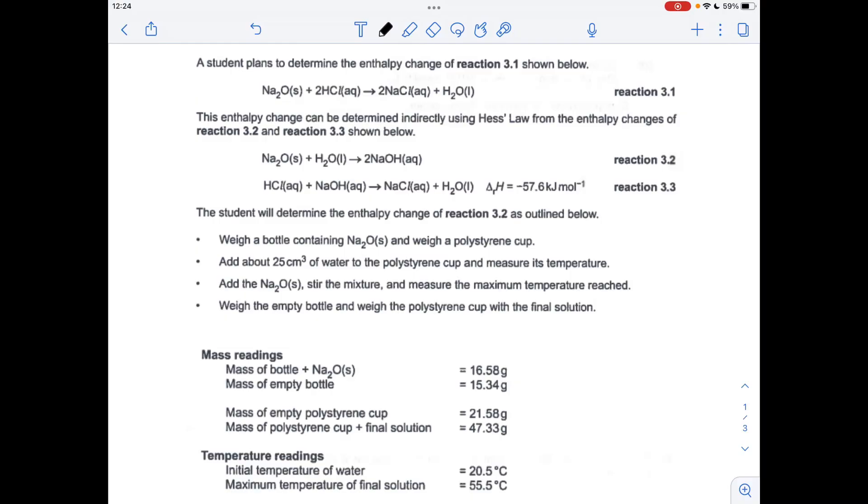Okay, so we'll make a start. The first thing I'm going to do is process all of this information here to calculate the enthalpy change for reaction 3.2. From the mass readings, the mass of sodium oxide is the difference between those two readings, which comes out at 1.24 grams. The mass of the solution is 25.75 grams, and the temperature change is 35 degrees C.